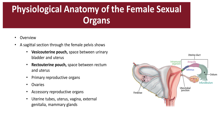The female reproductive system includes the ovaries and accessory organs, which include the uterine tubes, the uterus, the vagina, the clitoris, and the mammary glands. The mid-sagittal section through the pelvis shows its internal reproductive structures, and you can see the urinary bladder and the rectum.